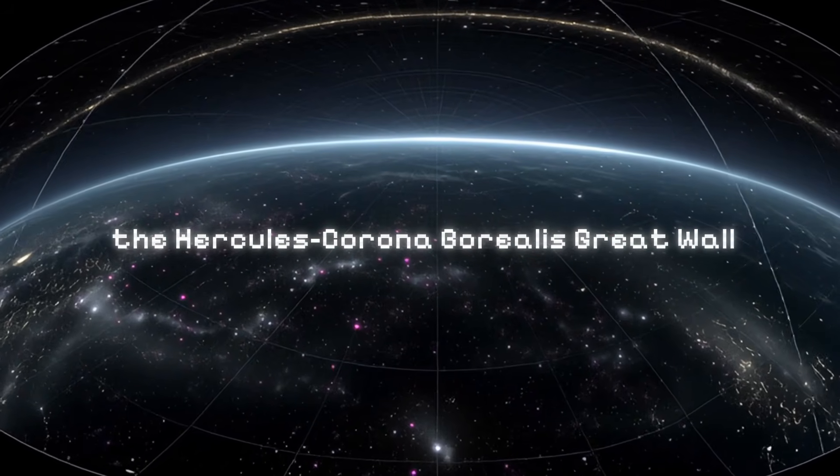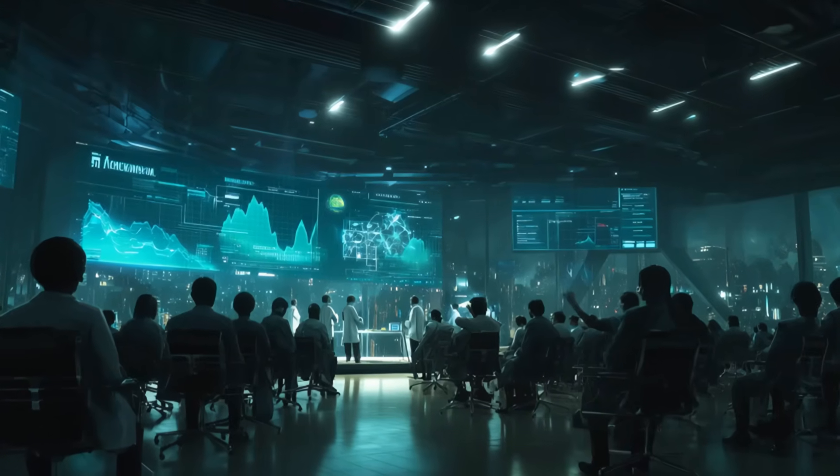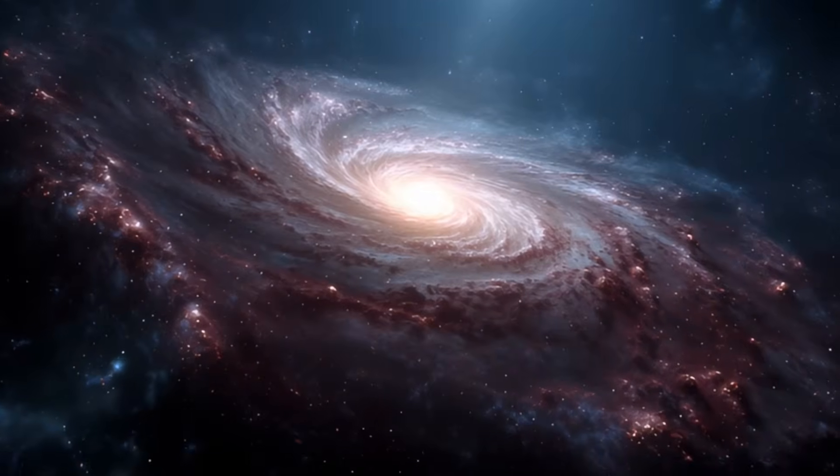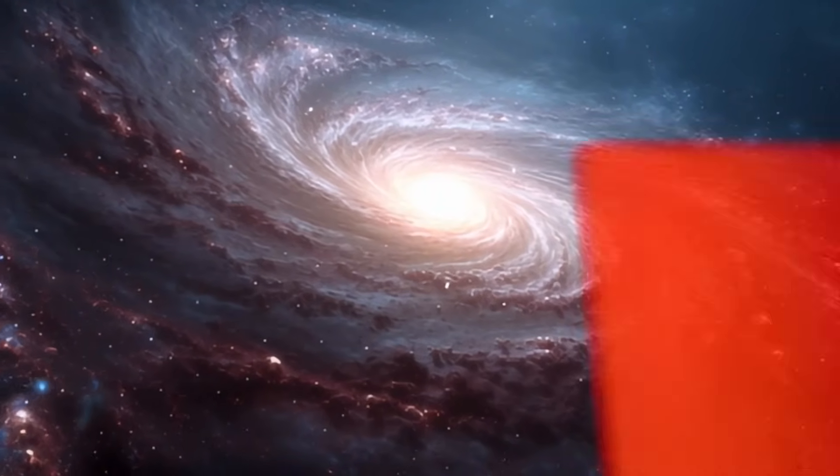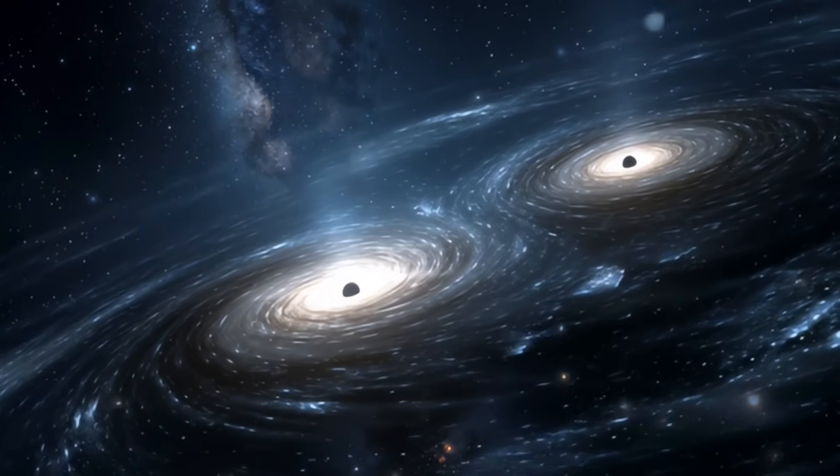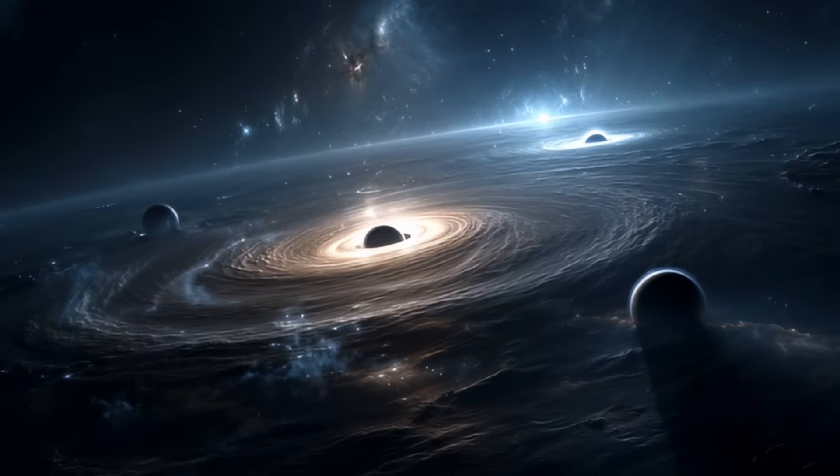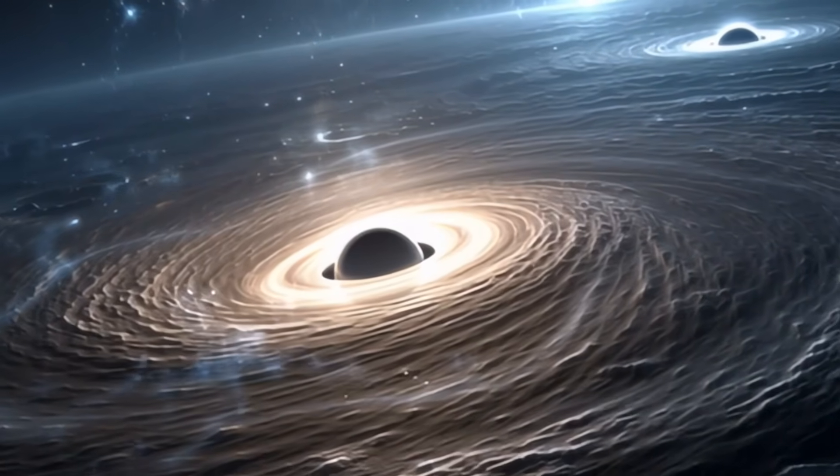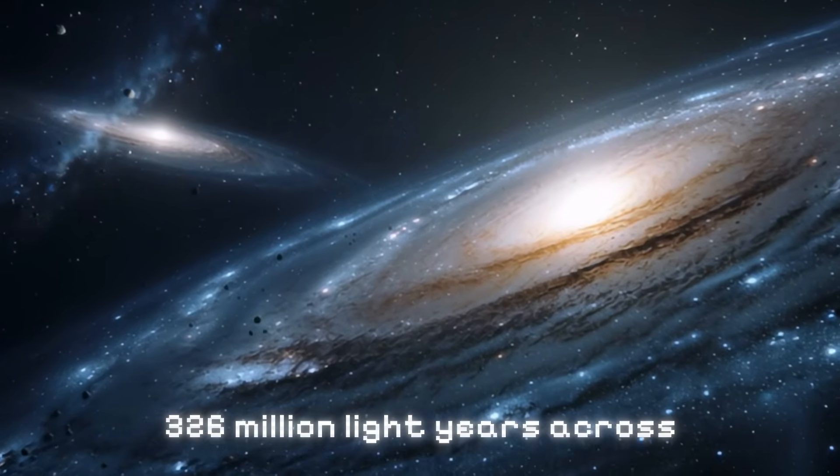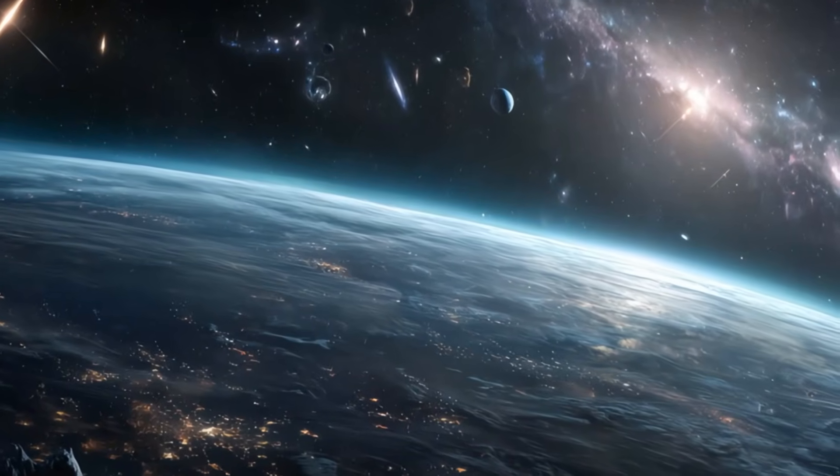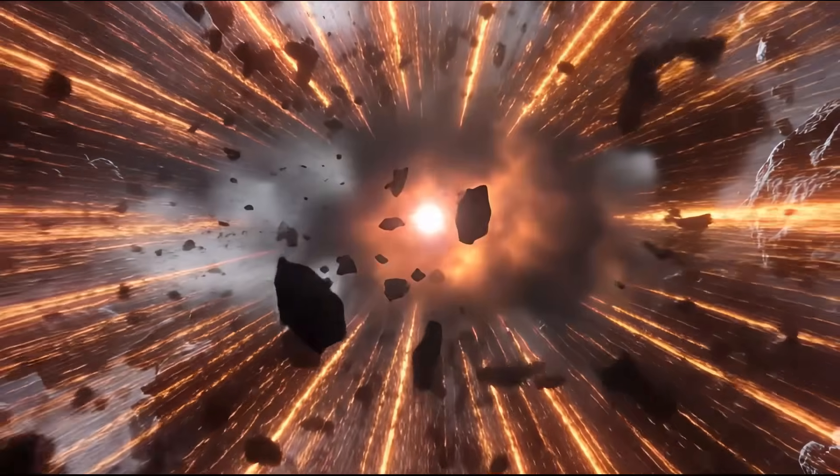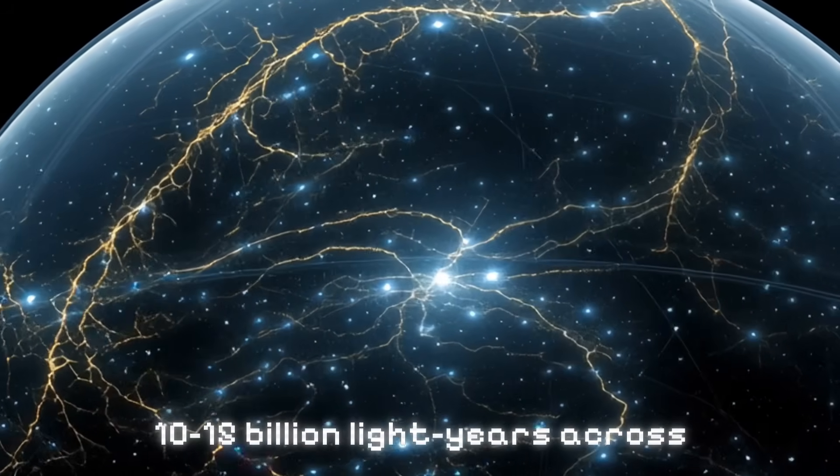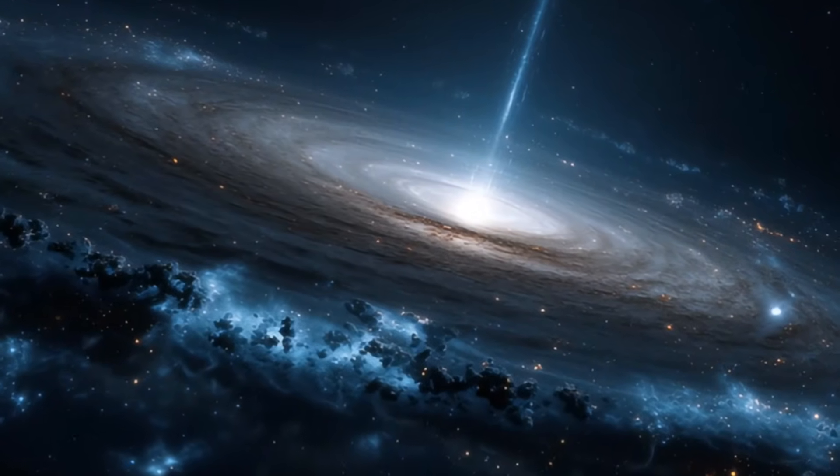Meet the Hercules-Corona Borealis Great Wall. The Cosmological Principle, which is basically the foundation of modern cosmology, states that when you zoom out far enough, the universe should look smooth and uniform in all directions. There can be some clumps and voids, sure, but on the largest scales, things should average out. There's even a theoretical limit called the end of greatness that suggests cosmic structures shouldn't exceed about 100 megaparsecs, or roughly 326 million light years across. The universe simply hasn't had enough time since the Big Bang for gravity to pull together structures larger than that. The Hercules-Corona Borealis Great Wall is somewhere between 10 and 15 billion light years across.